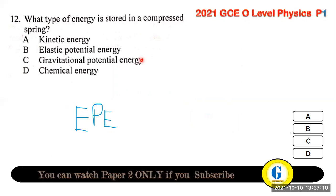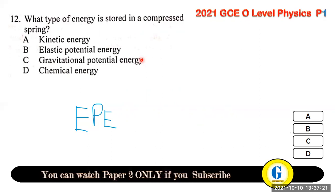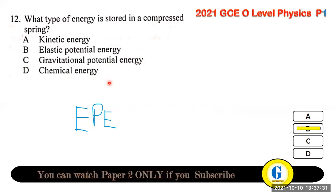Question 12: what type of energy is stored in a compressed spring? A spring stores elastic energy — when compressed it has elastic potential energy (EPE).